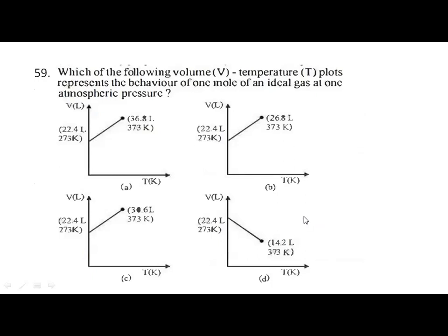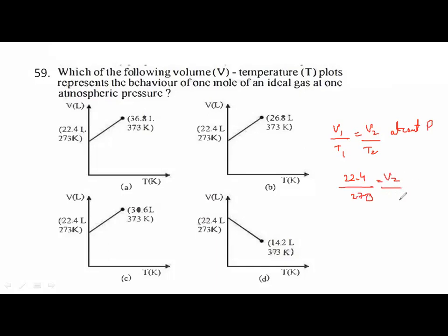Next question: which volume-temperature plot represents behavior of one mole of ideal gas at 1 atm? Using Charles' law: V₁/T₁ = V₂/T₂. At STP V₁ = 22.4 L, T₁ = 273 K. At T₂ = 373 K: V₂ = 22.4 × 373/273 = 30.6 L. The graph showing 30.6 L at 373 K corresponds to option C.